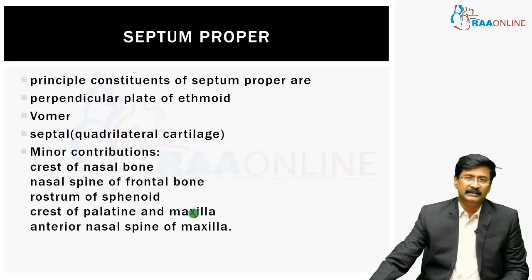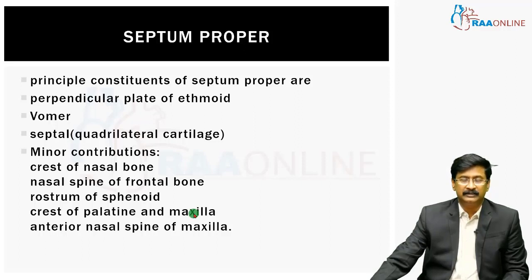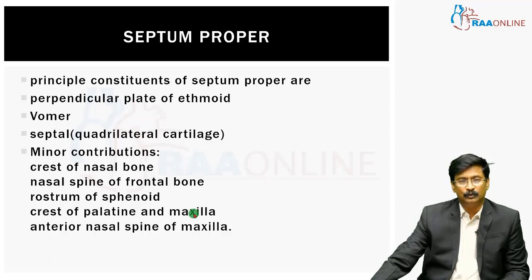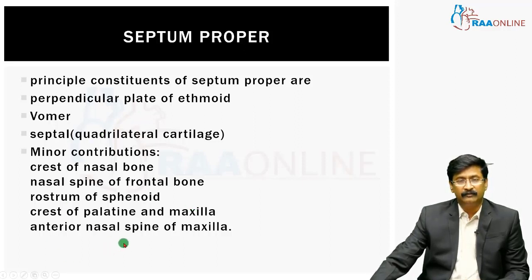What is septum proper? The principal constituents of the septum proper are the perpendicular plate of ethmoid, vomer, and septal cartilage — the anterior-most part is called the quadrilateral cartilage. Starting from anterior to posterior, you have your cartilaginous part and then your bony part. There are also minor contributions from the crest of nasal bone, nasal spine of frontal bone, rostrum of sphenoid, crest of palatine and maxilla, and sometimes the anterior nasal spine of maxilla.